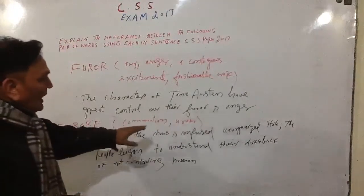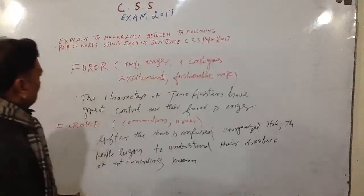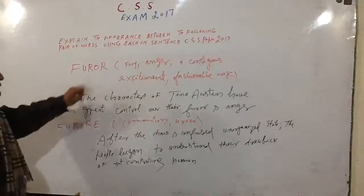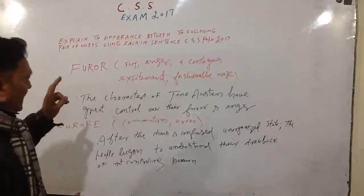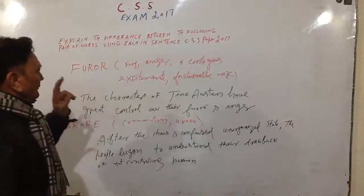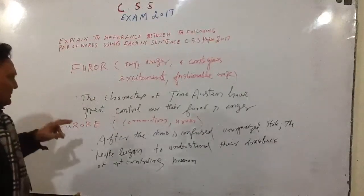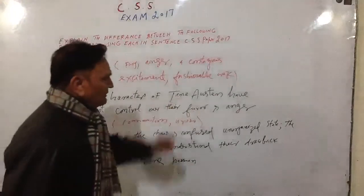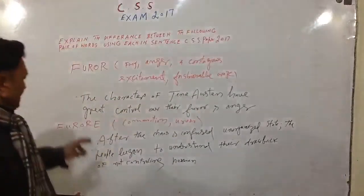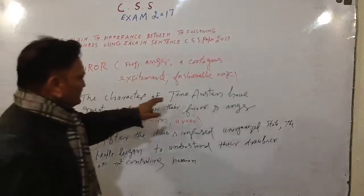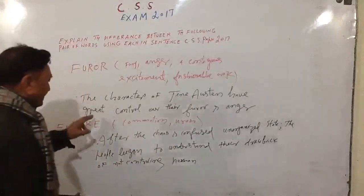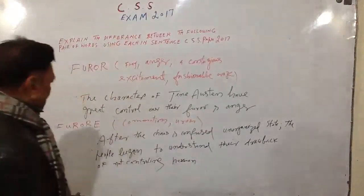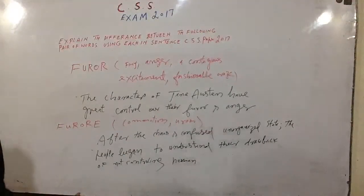Now let us analyze the first one: f-u-r-o-r, 'furor' — anger, fury, excitement and things like that. For example, using the characters of Jane Austen: 'The characters of Jane Austen have great control over their furor and anger.' Is that clear?